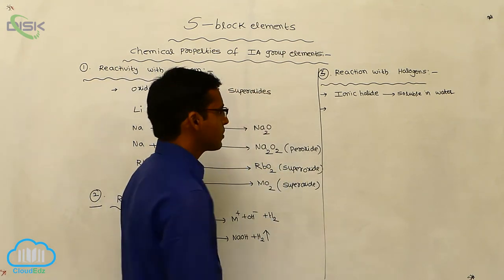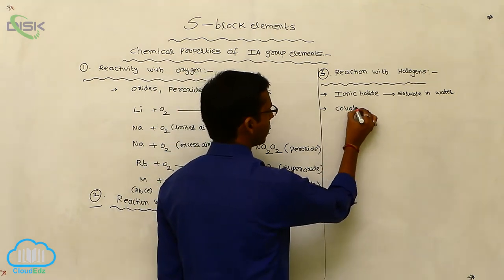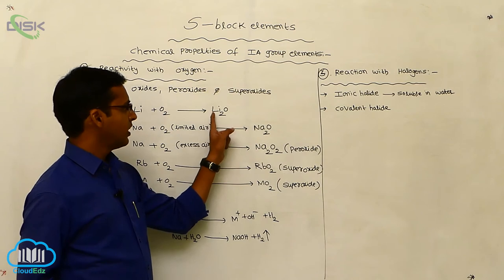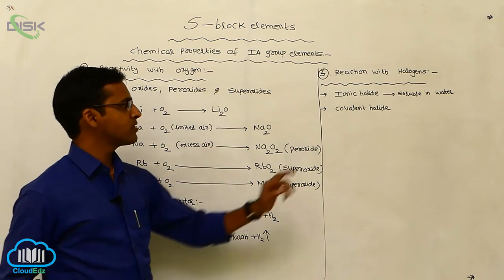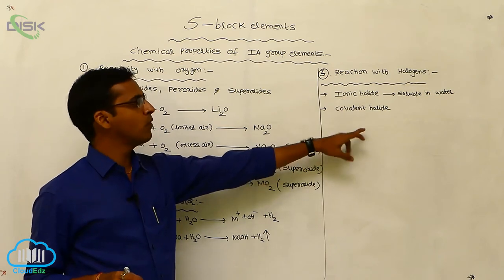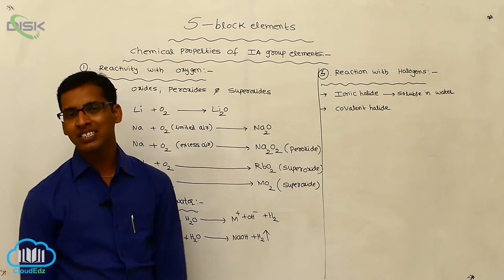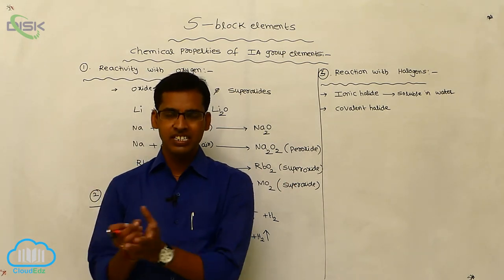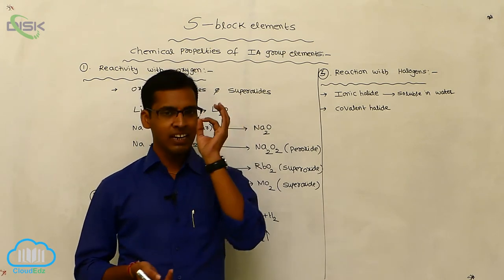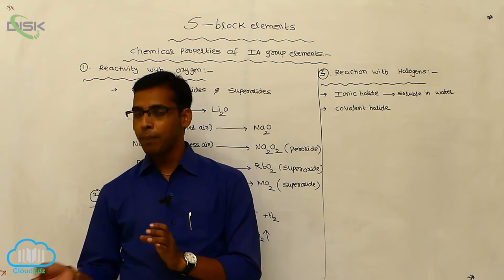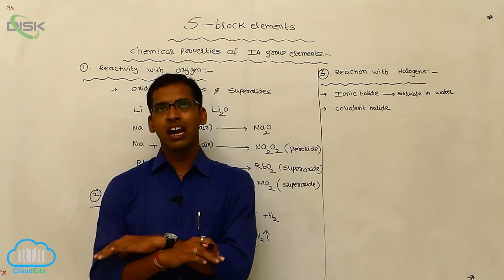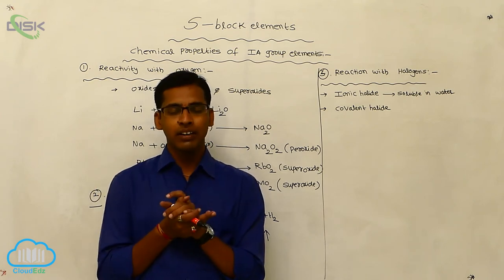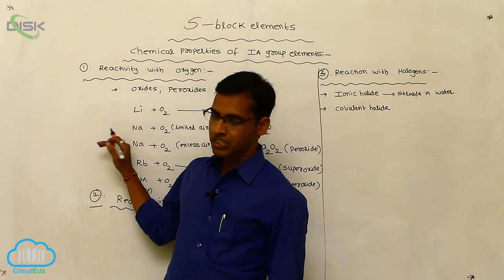However, lithium metal forms covalent halides. In first group elements, except lithium, all remaining metals form ionic halides. Lithium forms covalent halides, and these covalent halides are insoluble in water. They are kept in kerosene or petrol, because when kept in kerosene or petrol they are not exposed to nature. This is because lithium metal is much more reactive compared to sodium and potassium metals.